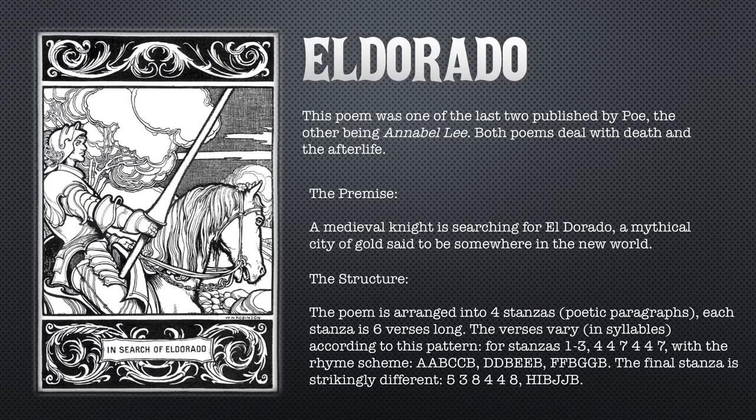The poem is arranged into four stanzas, or poetic paragraphs. Each stanza is six verses long. The verses vary according to their syllables into a particular pattern for stanzas one, two, and three. The first verse has four syllables, the second four, the third seven syllables, and then the last three repeat: four, four, seven. So the pattern is four, four, seven, four, four, seven.